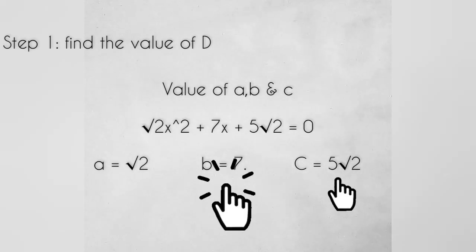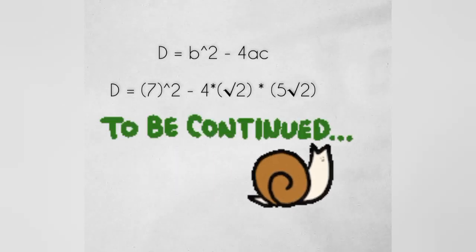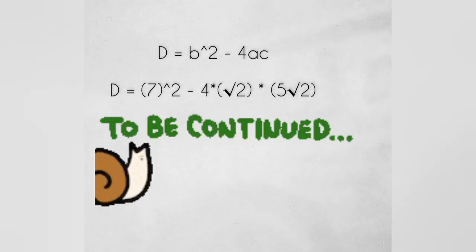Now let's find the value of d, that is nothing but b square minus 4ac. So it becomes 7 square minus 4 multiplied by root...